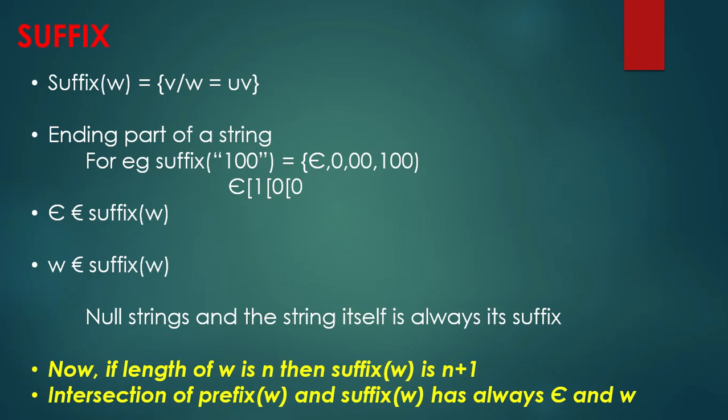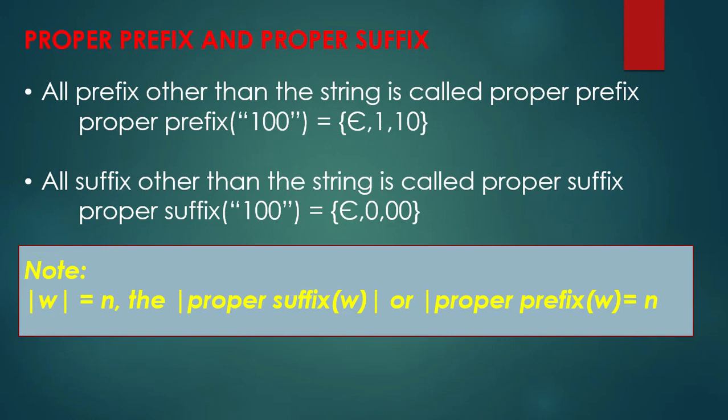The next terminology is proper prefix and proper suffix. A proper prefix excludes the complete string itself. For example, for string 100, the proper prefixes are: epsilon, 1, 10 — but not the string 100. Similarly for proper suffix: epsilon, 0, and 00. If the length of any string is N, then the number of proper prefixes or proper suffixes equals N, because we cannot include the particular string itself.